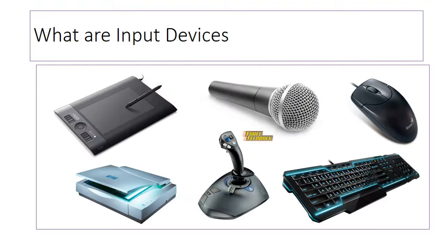Input devices come in different shapes and forms. Here we've got a collection of images showing different things: a graphics stylus in the top left-hand corner, a microphone, a mouse, a scanner, a joystick, and a keyboard. All these pieces of hardware can be used to give the computer information — to send data into it.